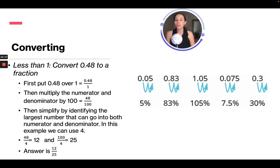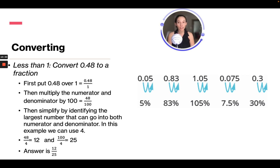So, converting. If we convert 0.48 to a fraction: first, we put 0.48 over 1, then multiply both the numerator and the denominator by 100, giving us 48 over 100. Then we simplify by identifying the largest number that goes into both — for this example we can use 4. So 48 over 4 equals 12, and 100 over 4 equals 25, so the answer is 12 over 25.